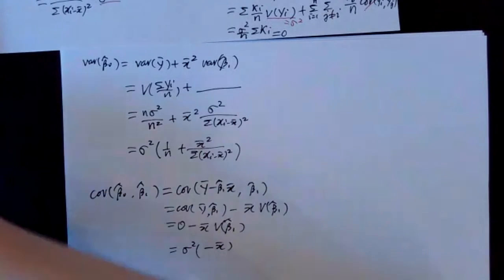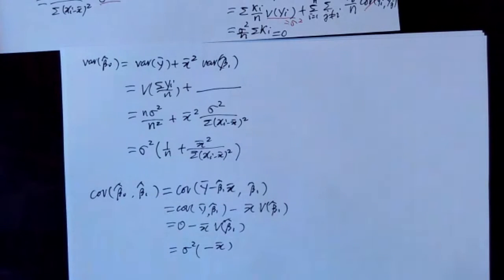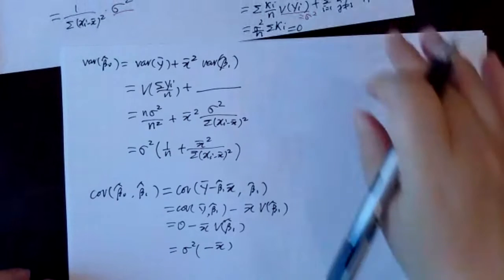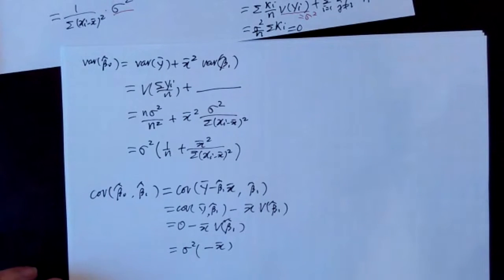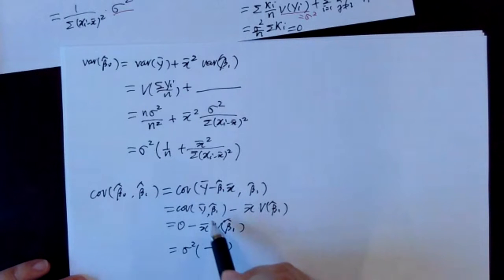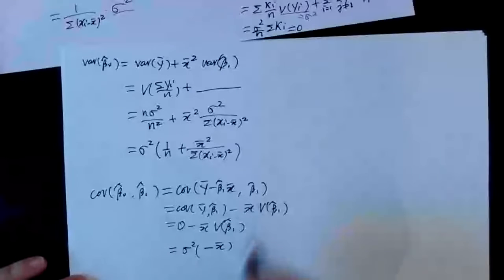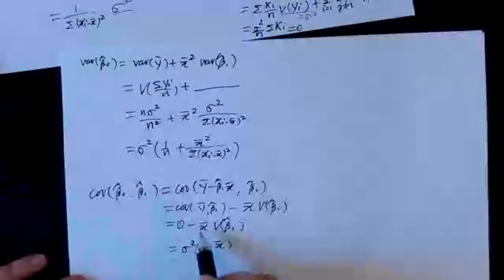After the connection interruption: the covariance of beta-0-hat and beta-1-hat equals negative x-bar divided by summation of (xi minus x-bar) squared — which is negative x-bar times the variance of beta-1-hat.